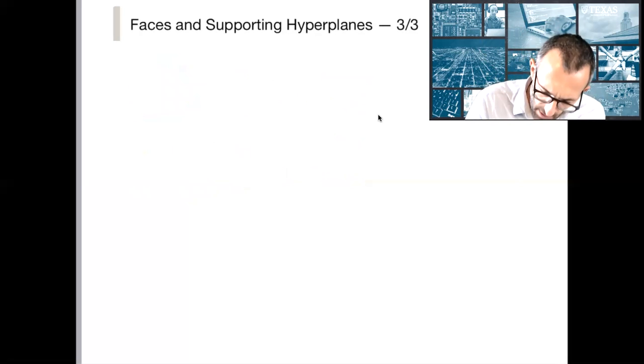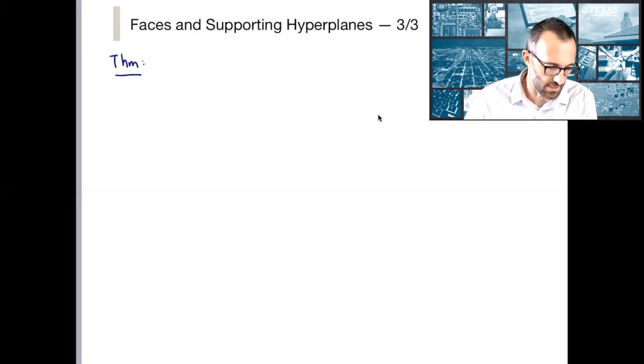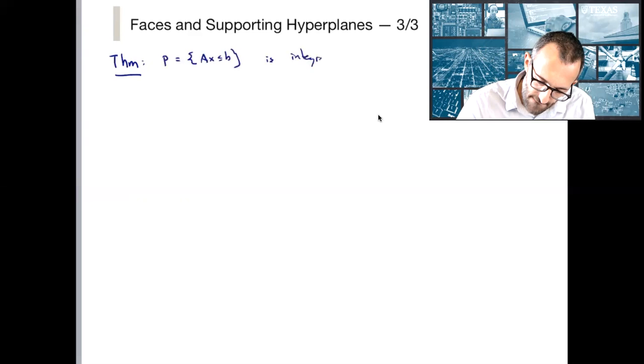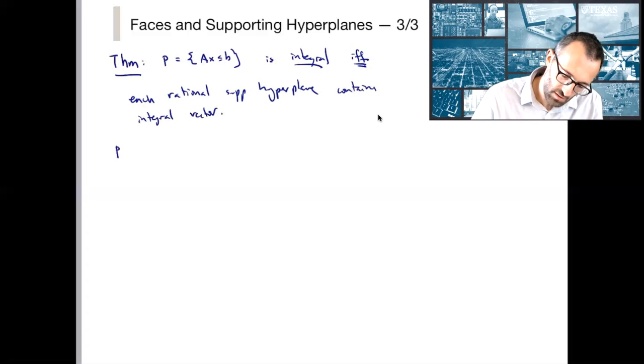So here's our first result about integrality. And it says the following. Again, part of the reason that I want to do this is it gives us a little bit of an opportunity to exercise with these ideas again. So the theorem says the following: p, which is defined as ax less than b, is integral if and only if every rational supporting hyperplane contains an integral vector.